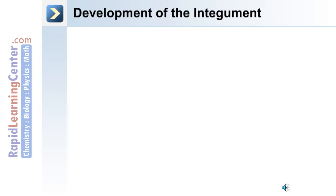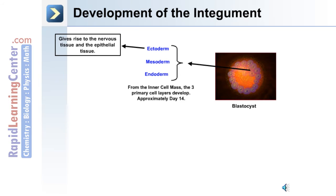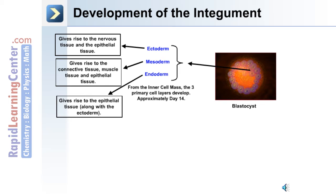The development of the integument begins from the inner cell mass of a blastocyst at approximately day 14, when each of the 3 germ cell layers are produced: the ectoderm, mesoderm, and endoderm. The ectoderm gives rise to the nervous tissue and epithelial tissue. The mesoderm gives rise to the connective tissue, muscle tissue, and epithelial tissue. The endoderm gives rise to epithelial tissue along with the ectoderm.